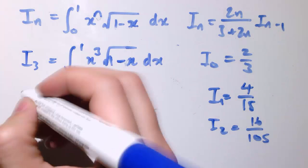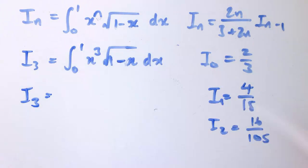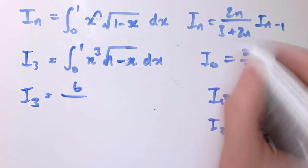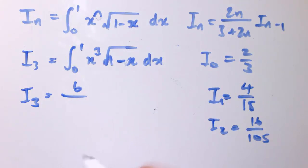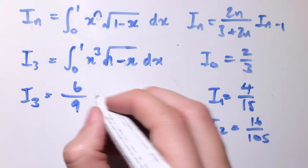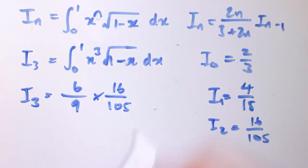And then finally, i3, the one we wanted at the start. Well, 2 times 3 is 6 divided by 3 plus 6. So that's 6 ninths or 2 thirds times 16 over 105. So if that's 2 thirds, well, that's 32 over 315. And that's the answer that we wanted.